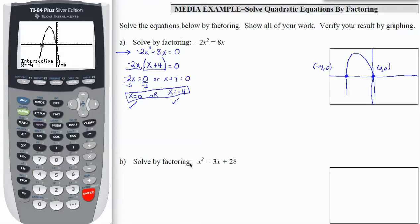Alright, let's look at the same kind of process for the second part, x squared equals 3x plus 28. So the first thing I'm going to do is to set this in standard form by subtracting 3x and 28 from both sides. So I'm moving everything to one side and putting 0 on the other side.